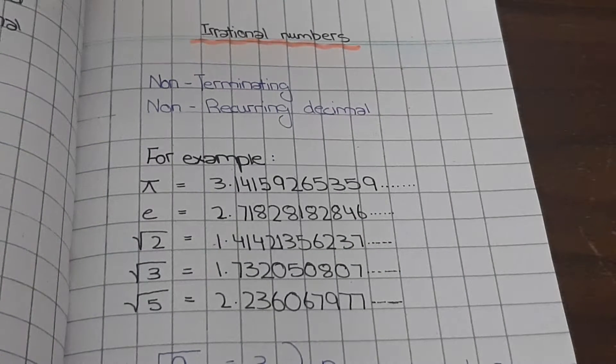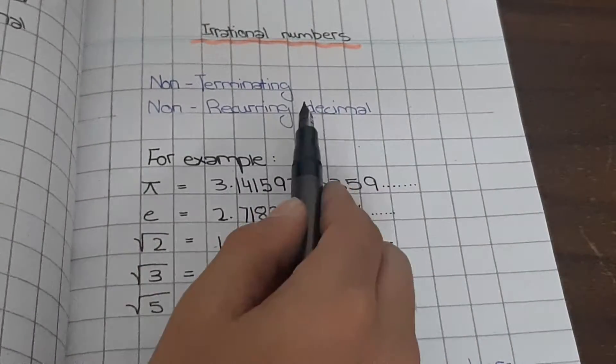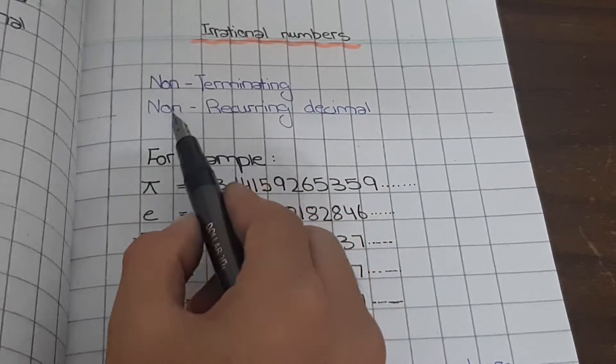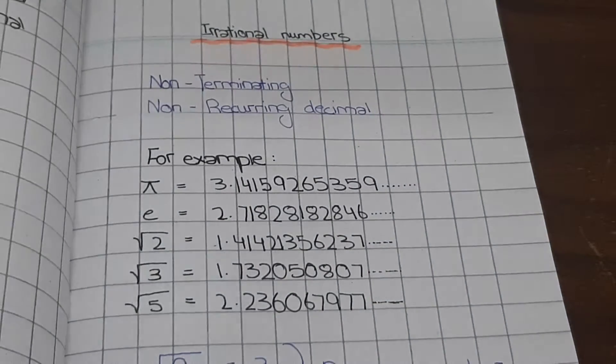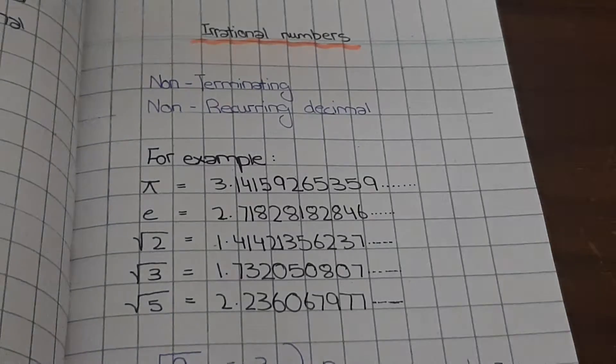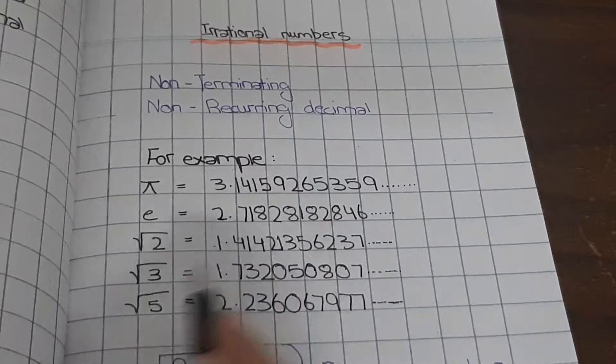First of all, what are irrational numbers? They are decimal numbers which are non-terminating, which means they never end. They are infinite and non-recurring decimal. They don't repeat each other like 3.464646, not like this. These are all irrational numbers.